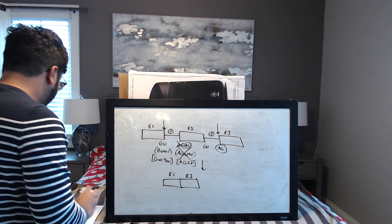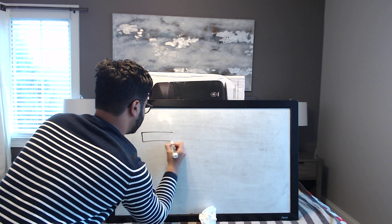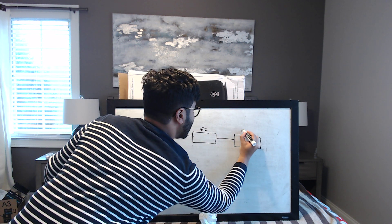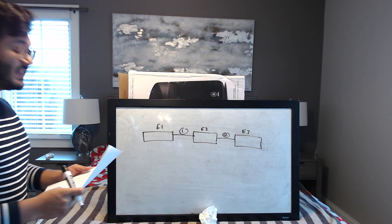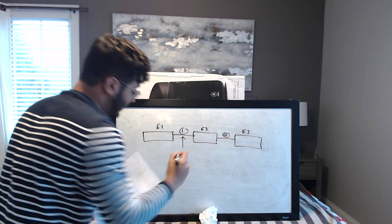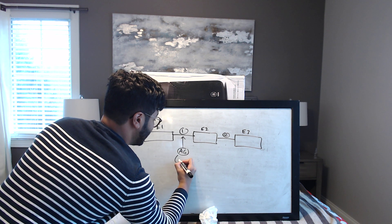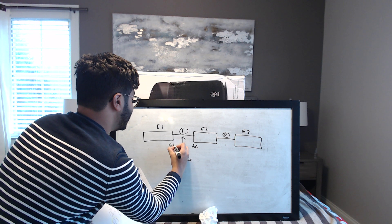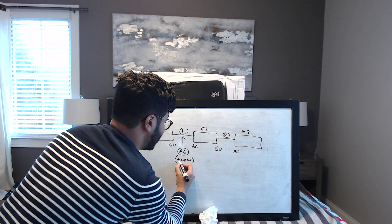The next example: a mutation within intron one where they're adding a new splice acceptor site — a new AG site — within intron one. Adding a new acceptor site doesn't mean the original one went away. You still have the original acceptor site, the original donor sites, and now this new acceptor site inserted earlier within intron one. Let's see how this new site changes the answer.